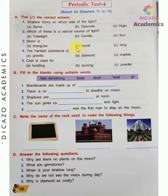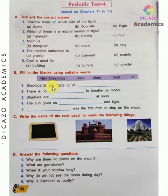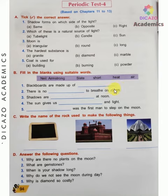The hardest substance is diamond. Coal is used for burning. Now fill in the blanks: blackboards are made up of slate. There is no air to breathe on the moon.